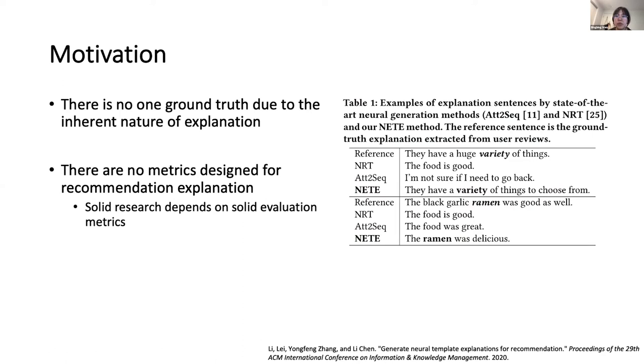The right table shows some explanations generated by existing SOTA models. People usually extract user reviews as ground truth and compare the quality of explanations with ground truth. However, there's no such ground truth for explanations due to the inherent nature of explanation. To the best of our knowledge, a general and commonly accepted matrix for explanation in recommendation systems is still missing. However, solid research depends on solid evaluation metrics. We need to develop solid metrics for evaluating this kind of explanations.